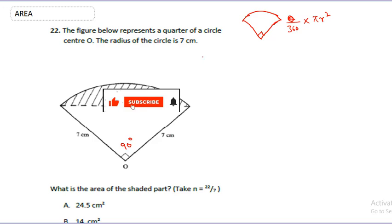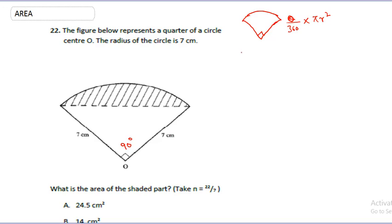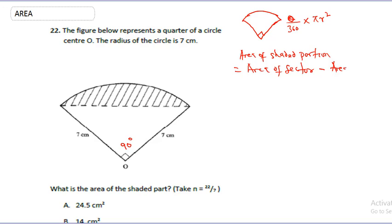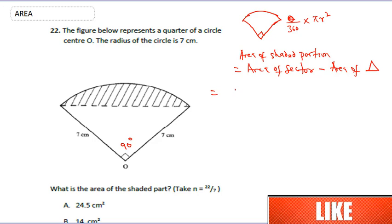Because this shape is a quarter circle, we know the angle is 90 degrees. To get the area of the segment or shaded portion, we say: area of segment equals area of sector minus area of triangle. If you cut out the triangle from the full shape, you get the shaded portion.